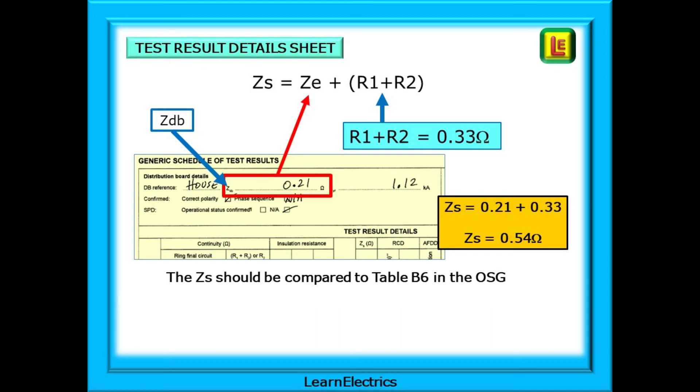For this example, take the 0.21 ohms for ZDB, and add it to the 0.33 ohms for R1 plus R2 from the test results page. 0.21 plus 0.33 is 0.54 ohms. And that is the ZS for this circuit.